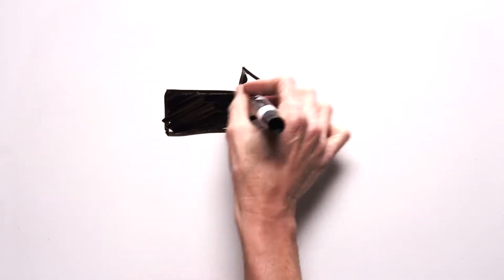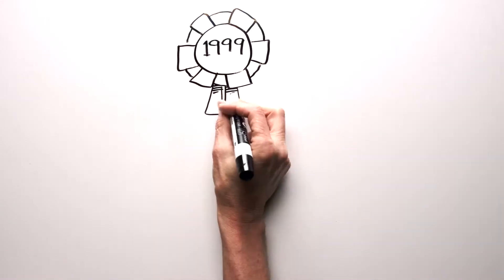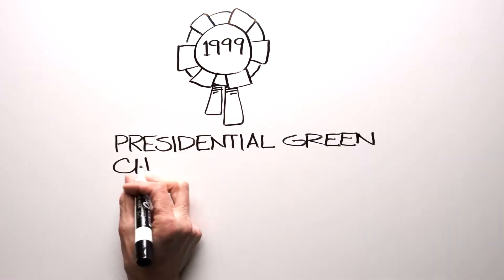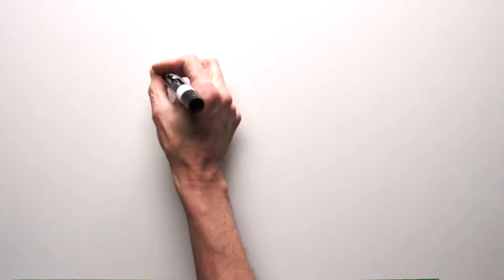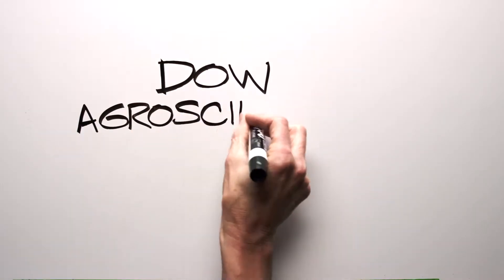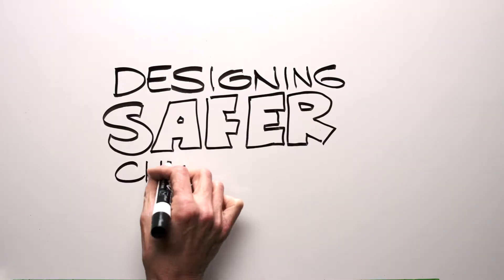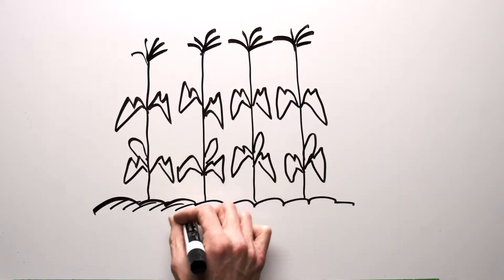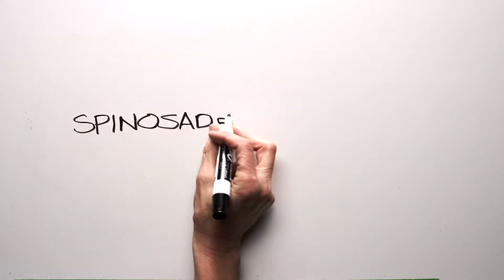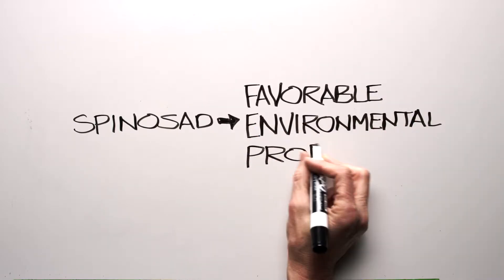Additionally, the introduction of spinosad for use in agriculture resulted in the receipt of a Presidential Green Chemistry Challenge Award in 1999 from the U.S. Environmental Protection Agency. The award was presented to Dow Agro Sciences, LLC, in the category of Designing Safer Chemicals, for the introduction of spinosad as an insect control product for use on crops. This award demonstrates that spinosad, as a technology for insect control, has a favorable environmental profile.